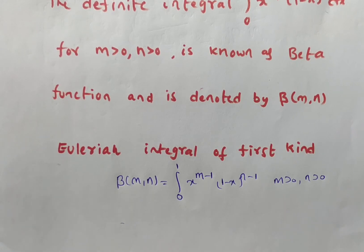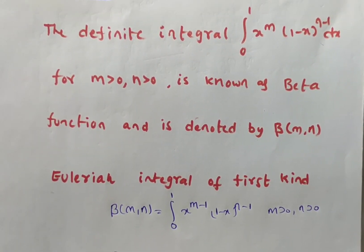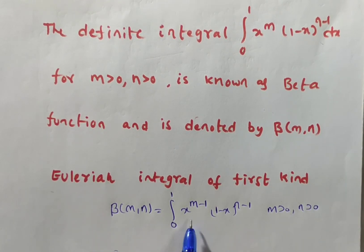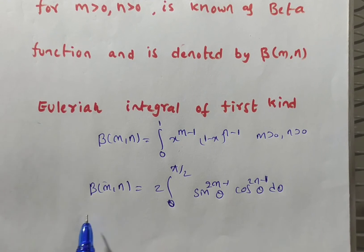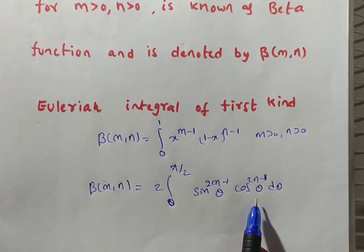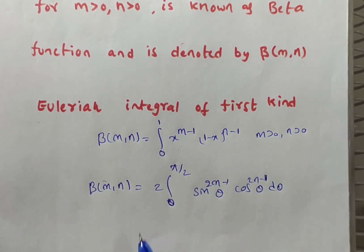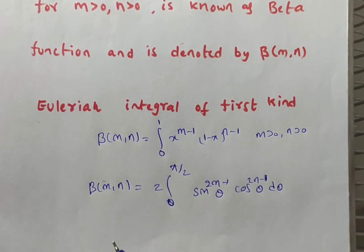There is also a relation between Beta and Gamma functions. The Beta function written in terms of x can also be written in terms of sin and cos. The formula is: Beta(m, n) = 2 times the integral from 0 to pi/2 of sin^(2m-1)(theta) * cos^(2n-1)(theta) d(theta). In the next videos we will discuss the relation between Beta and Gamma, symmetrical properties of the Beta function, and its different transformation forms.